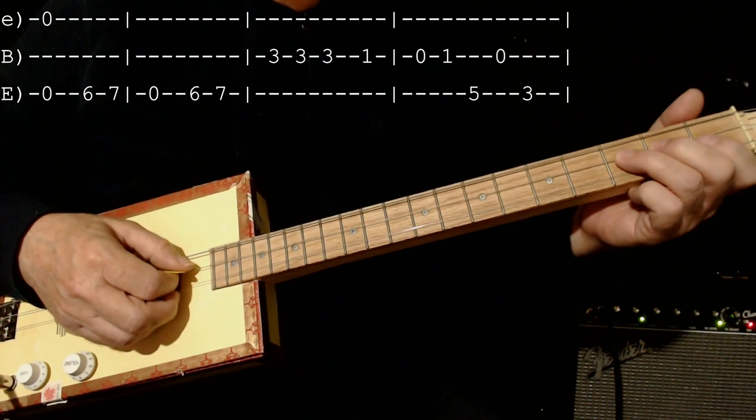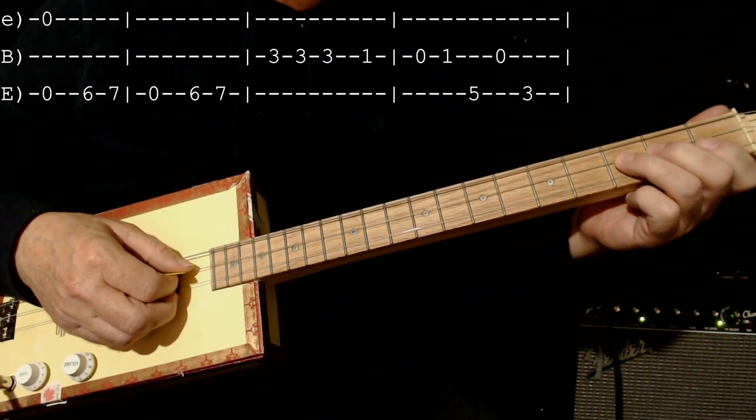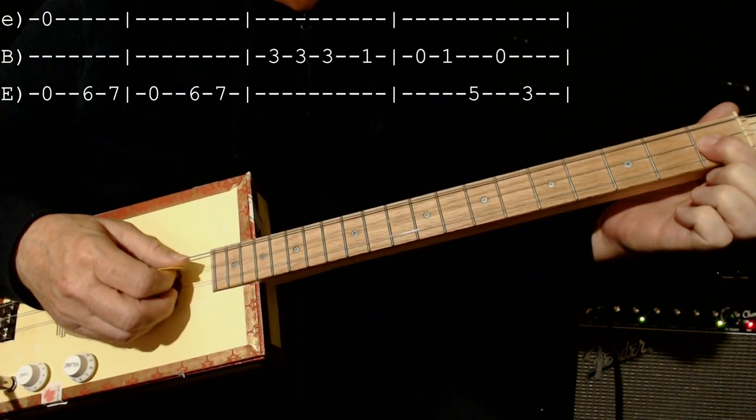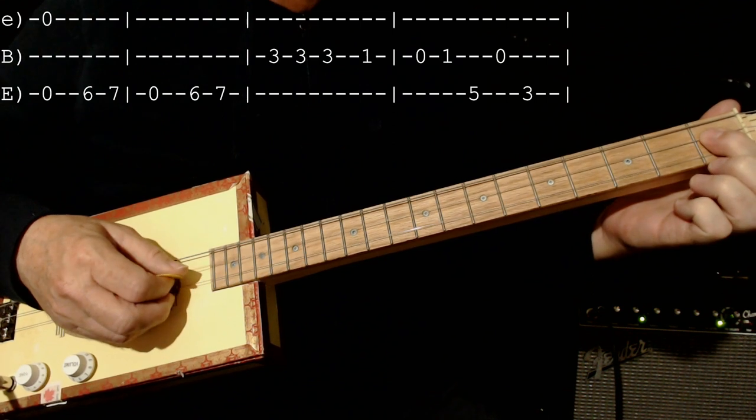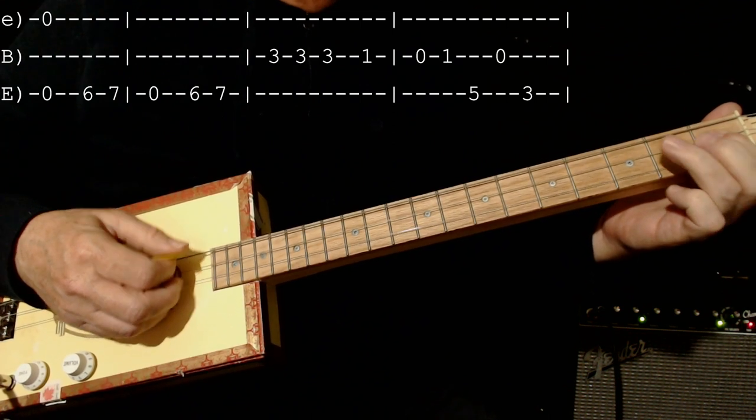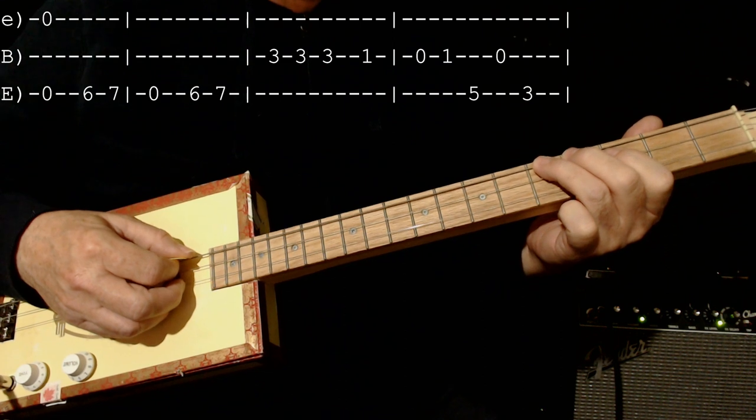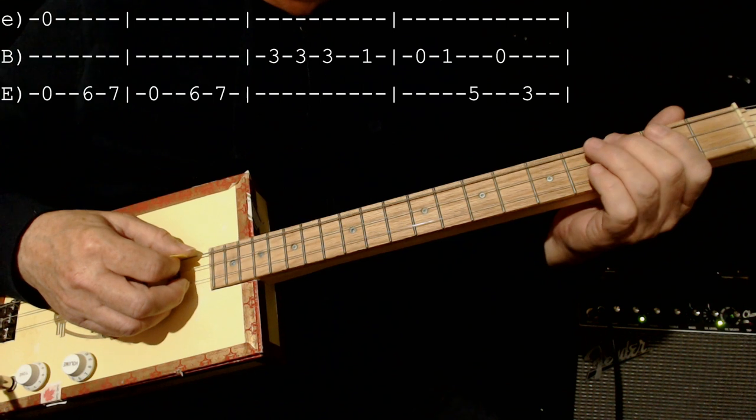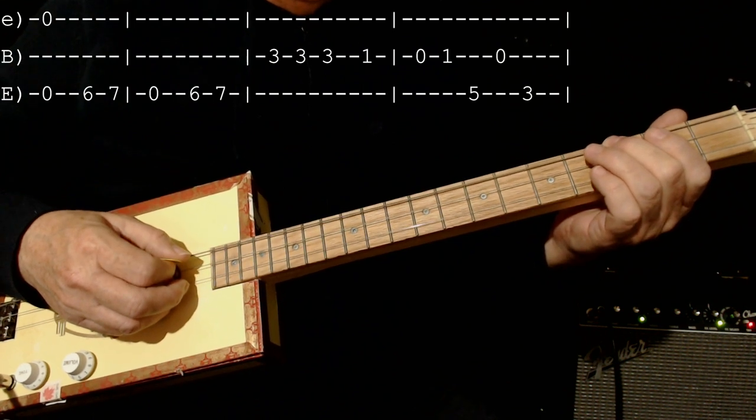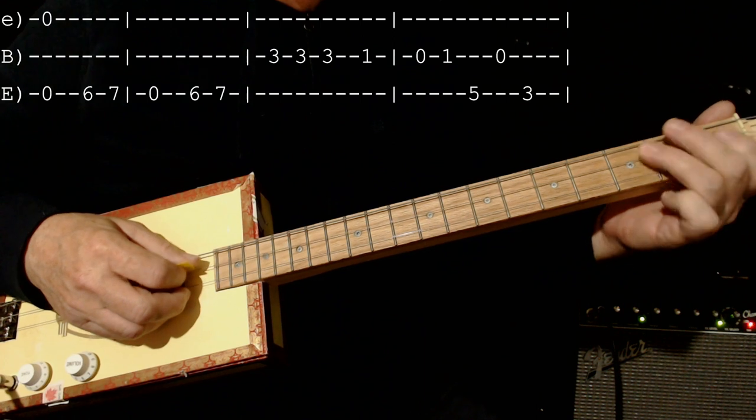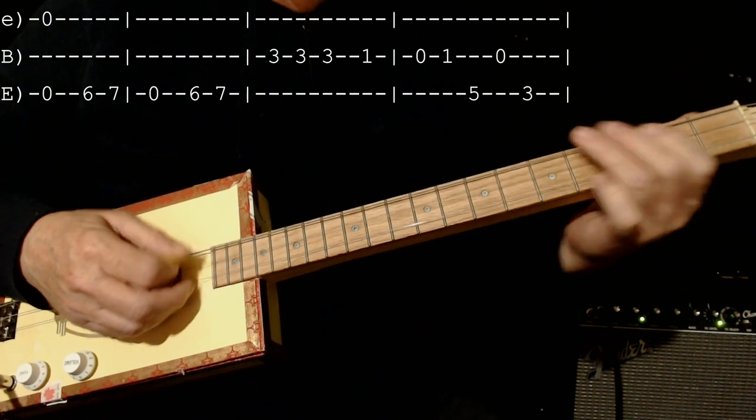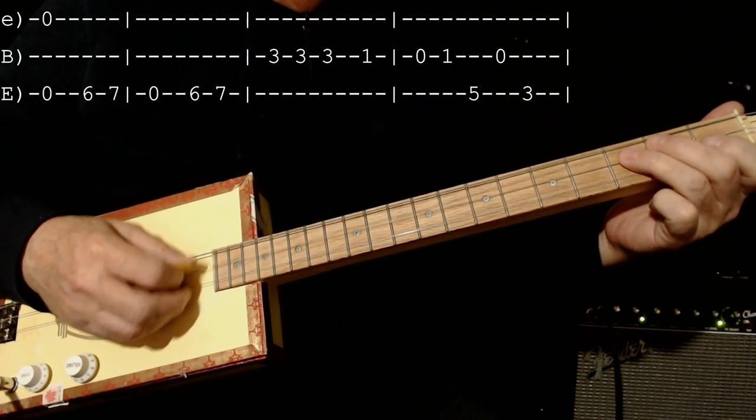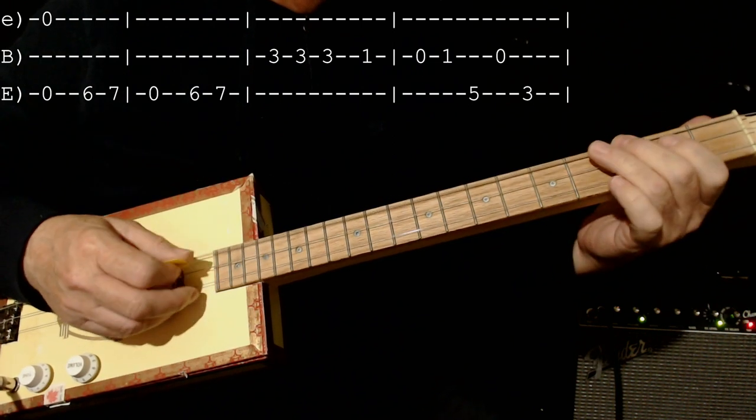Now we come to the next part of the song. Starts on the middle string with 3, 3s. Then 1. Open. 1, still on the middle string. Then 5 on the low string. Open middle. 1, still on the middle. Then 3.